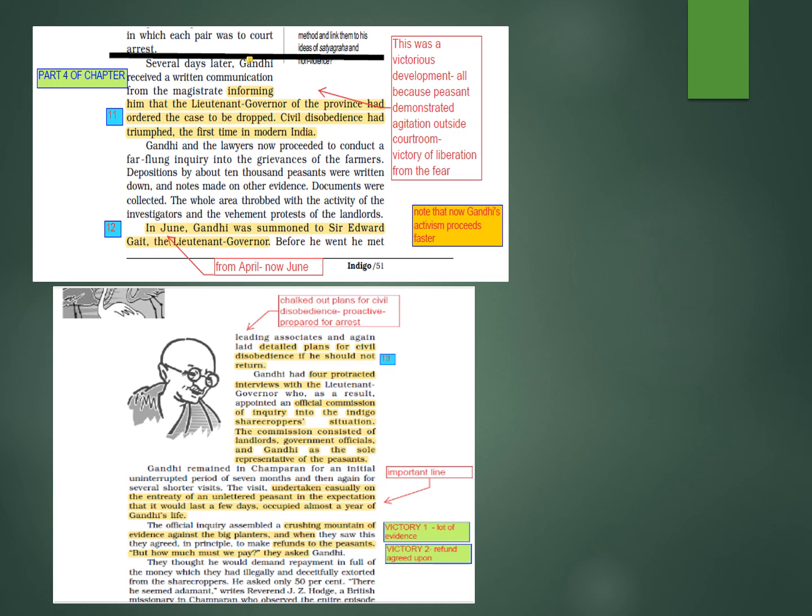Several days later, Gandhi received a written communication from the magistrate. Lieutenant Governor Sir Edward Gate had told the magistrate that the case would be dropped. This was the first victory — civil disobedience had triumphed for the first time in modern India. Gandhi had disregarded the order to leave and written 'disobey' on the receipt of the official notice.